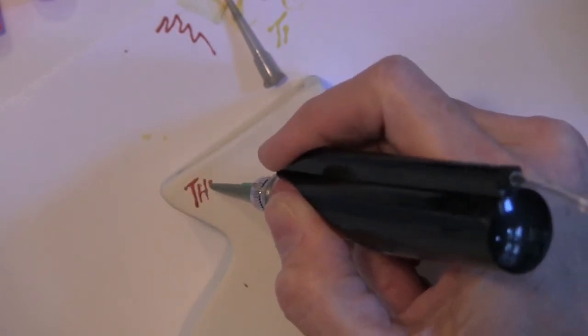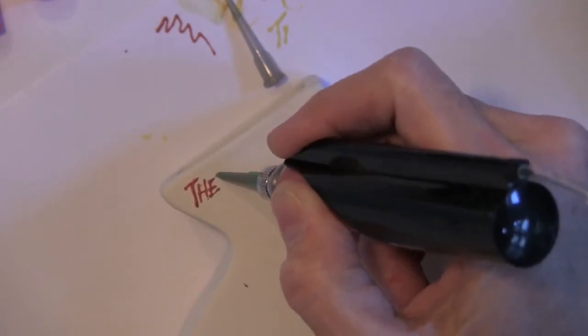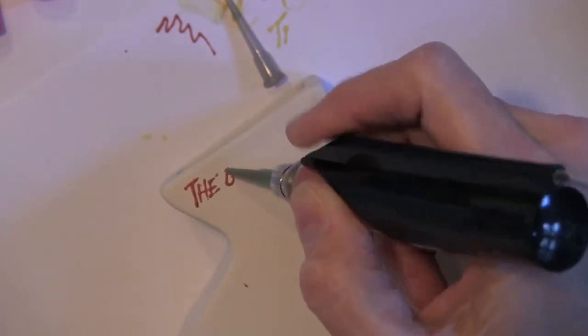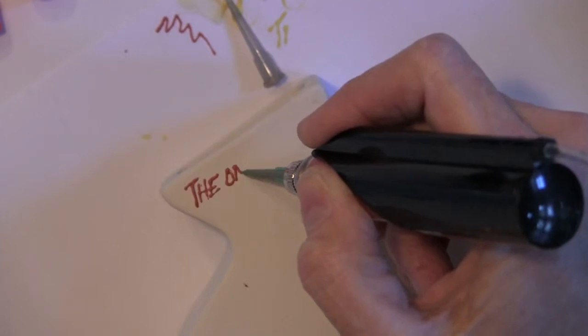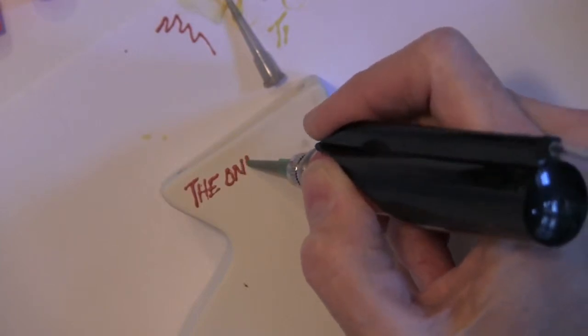The way that you work the air pen is to cover the hole that's on top of the pen with your fingertips and it draws a line. Take your finger off of the hole and it stops.